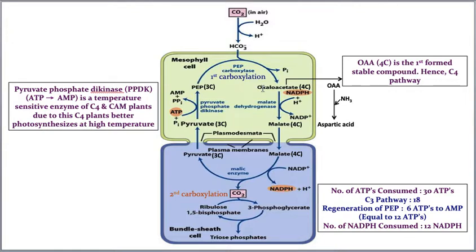The second step: oxaloacetic acid releases some hydrogens, which are accepted by NADP to form NADPH2. OAA then converts into malate (malic acid). This reaction is catalyzed by the enzyme malate dehydrogenase.